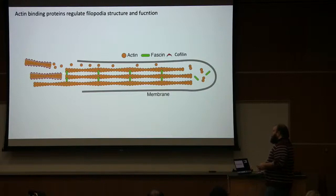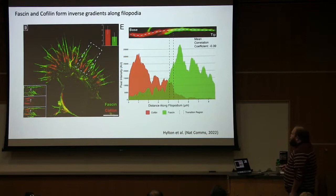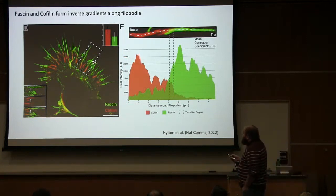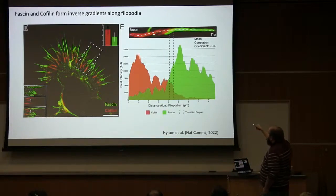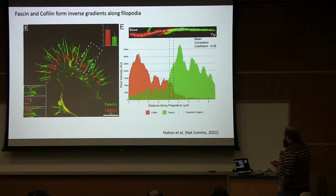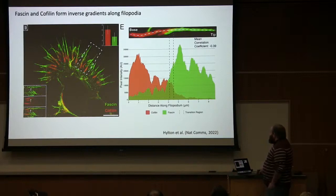We think there's something more complicated going on — Cofilin is not simply a severing molecule. It's playing a structural role in regulating both structure and dynamics of filopodial extensions. We started by doing immunolabeling of wild-type neurons and looking at growth cones. You can see these filopodia have an inverse gradient of Fascin in green and Cofilin in red. Running a line scan shows this inverse gradient, and we think something special is happening in the central region where you see the most colocalization between the two.